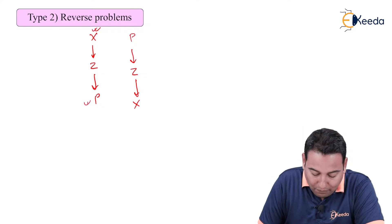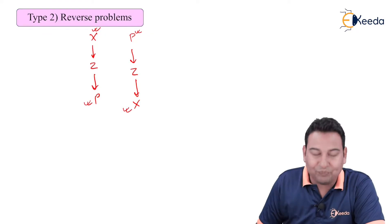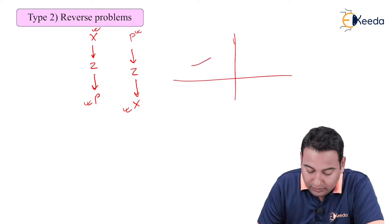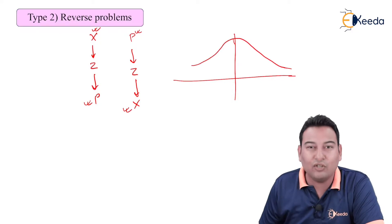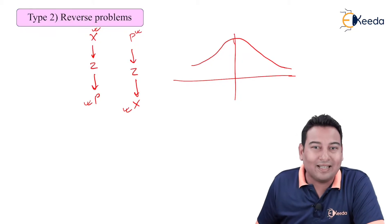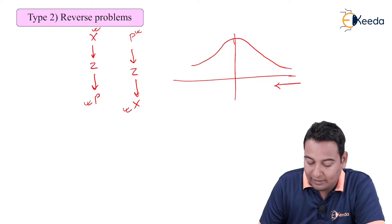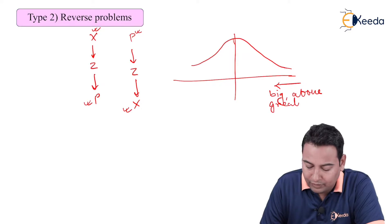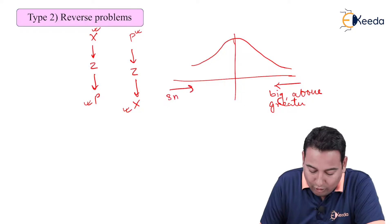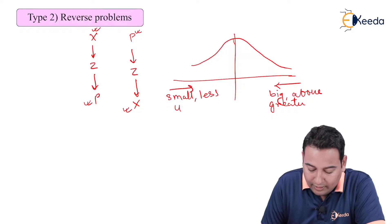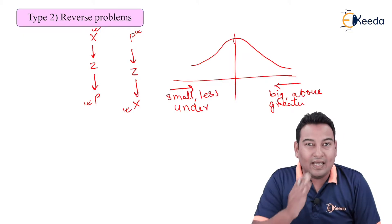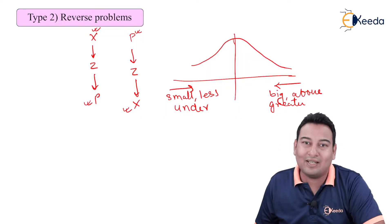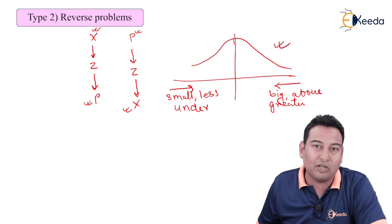In type 1, from x we found out probability. In type 2, from probability we are going to find out x. For this particular type you need to remember one technique. This is the curve you need to remember: whenever you see words like big, greater, above, you are going to look from the right side. And whenever you see words like small, less, under, you are going to check from the left side. As you move right the values increase like 1, 2, 3, 4, and on the left side the values decrease.